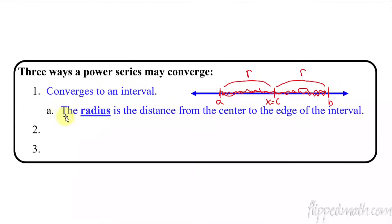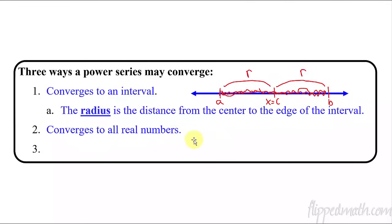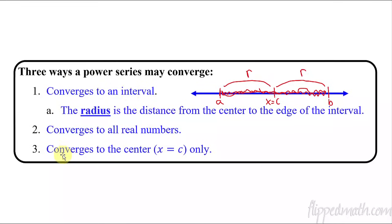The radius is the distance from the center to the edge of the interval. So if we figure out the interval where it's converging, the radius is easy — you just go from the center to the outside edge. Now another way, besides just an interval, is that it might converge to all real numbers. And the third way it might converge is that it converges only to the center, x equals c, and nowhere else. So these are the three ways it's going to converge — get that written down.